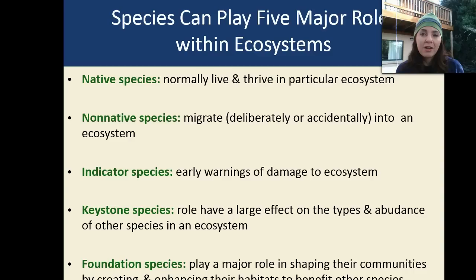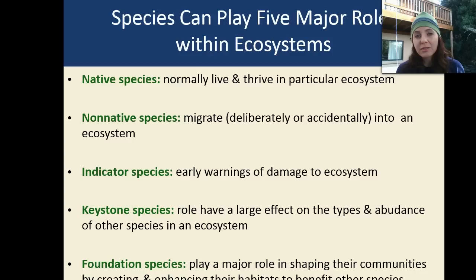Indicator species are species that give us early warnings of damage to the ecosystem, such as amphibians. Keystone species are species that have a role with a very large effect on the types and abundance of other species in an ecosystem. And a foundation species plays a very important role in shaping their communities by creating and enhancing the habitats that benefit themselves as well as other species, such as beavers building dams.